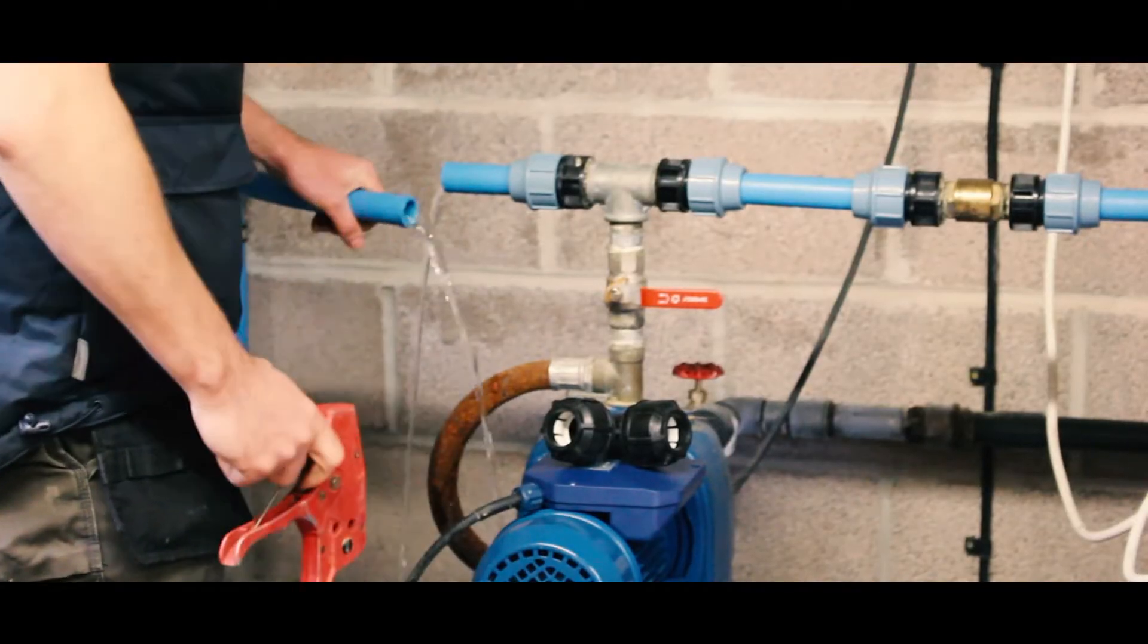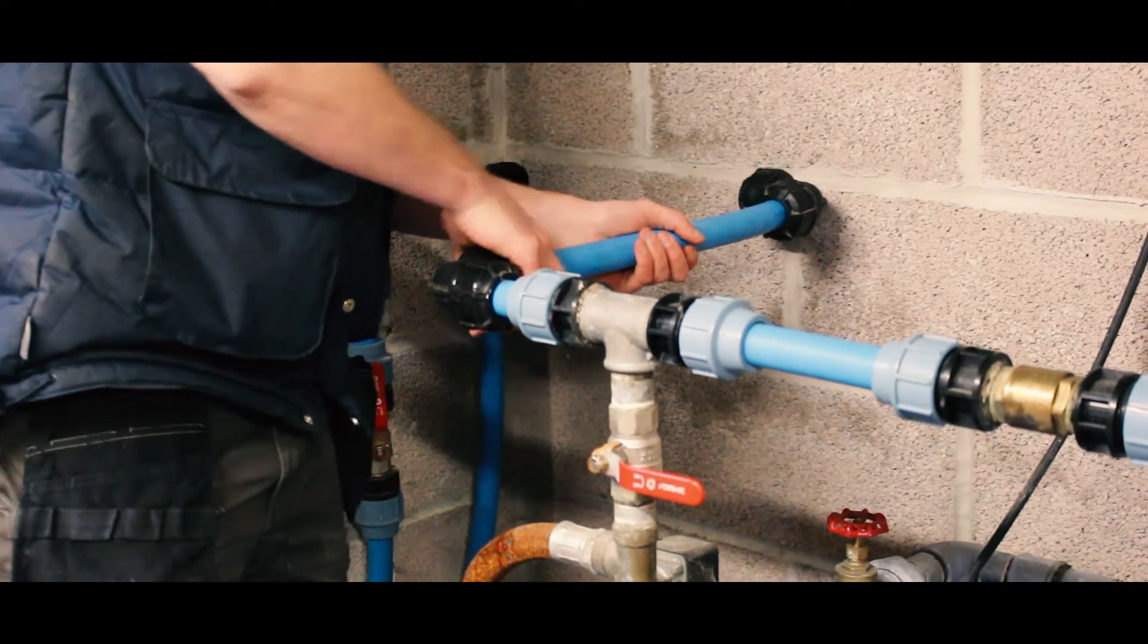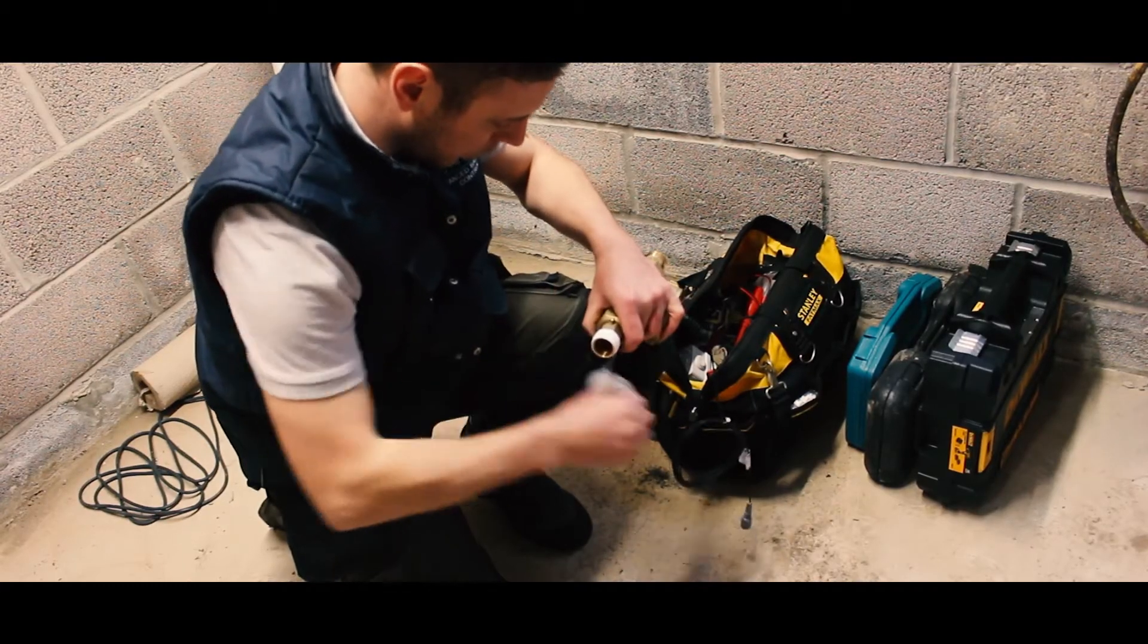Once the excess water is drained, connections are put in place. The water meter is then prepared with added connections to fit the pipe size.